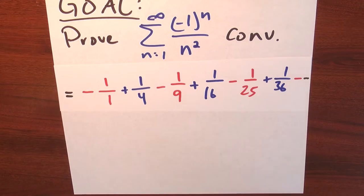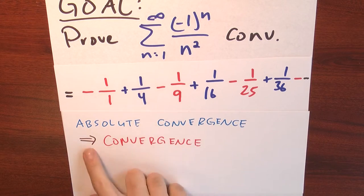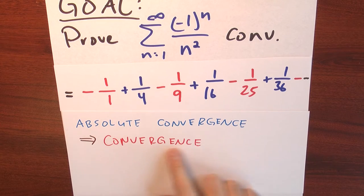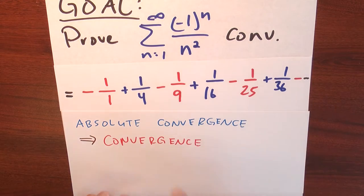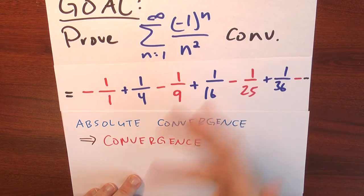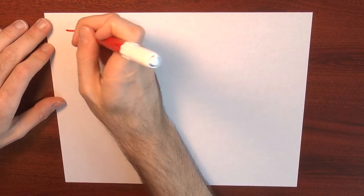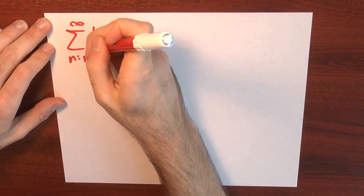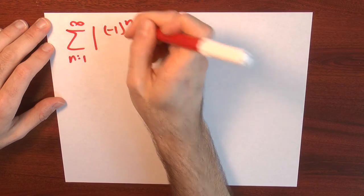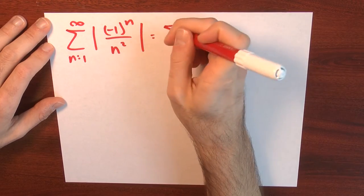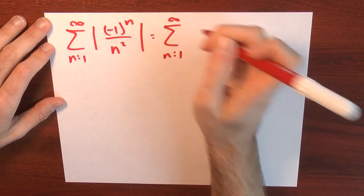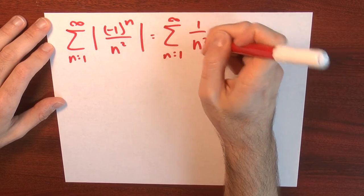But I can think about absolute convergence. I can use the theorem that absolute convergence implies just regular old convergence. So if I can just prove that this series converges absolutely, then I know that it converges in just the usual sense. So let's try that. What I know is this: the sum n goes from 1 to infinity of the absolute value of minus 1 to the n over n squared. Well, that's exactly the same thing as the sum n goes from 1 to infinity of just 1 over n squared.